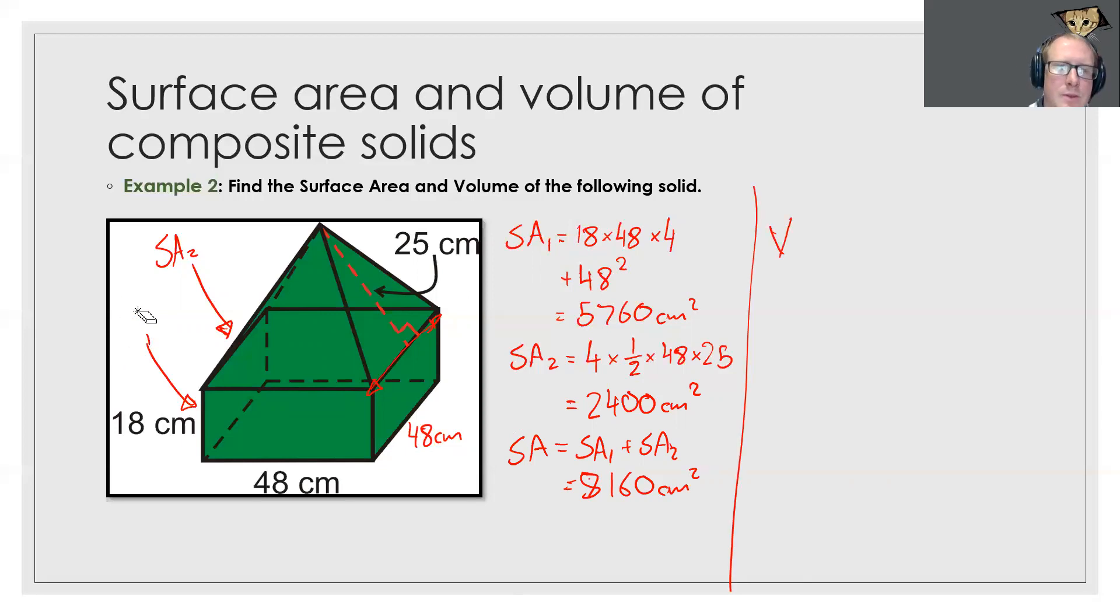Let's try and do the volume just like before. This is my volume 1, this is my volume 2. So my volume 1 is just going to be 48 times 48 times 18 which gives me 41,472 centimeters cubed.